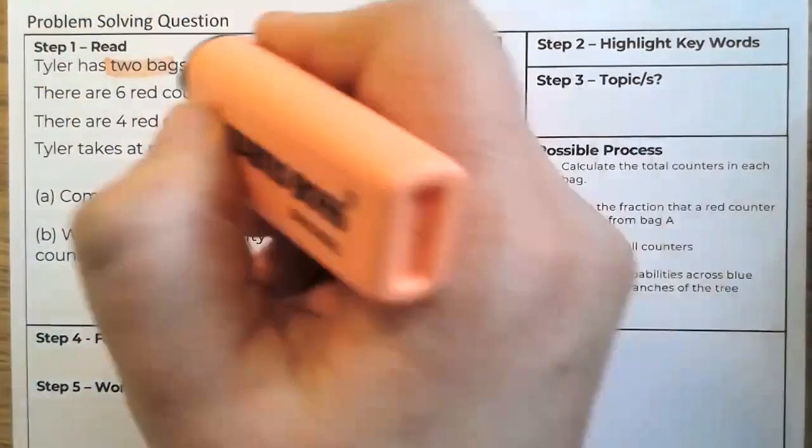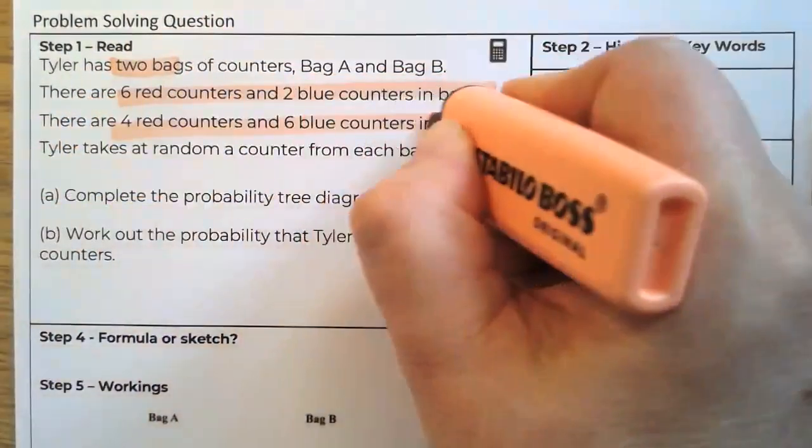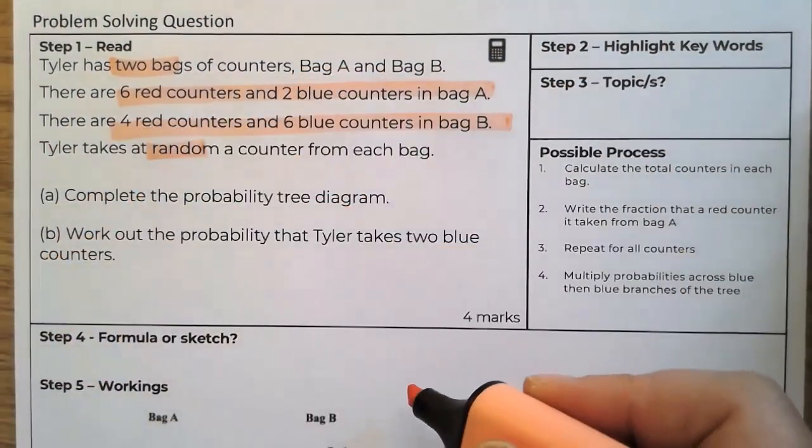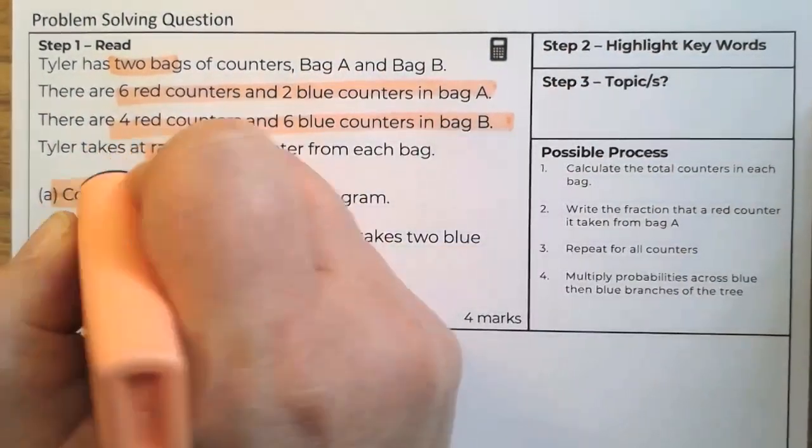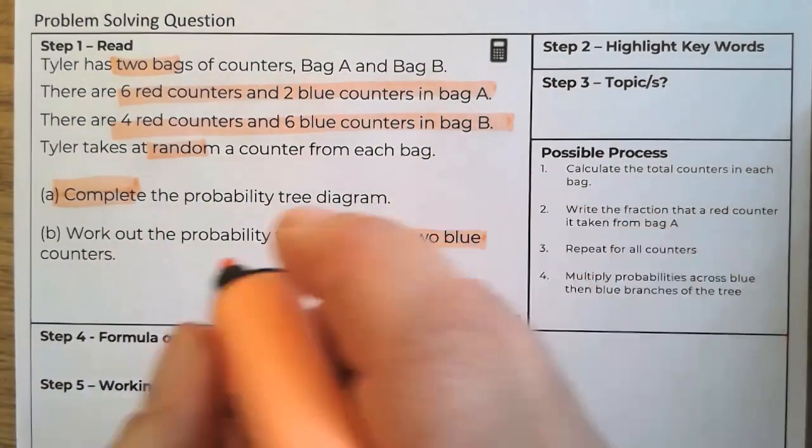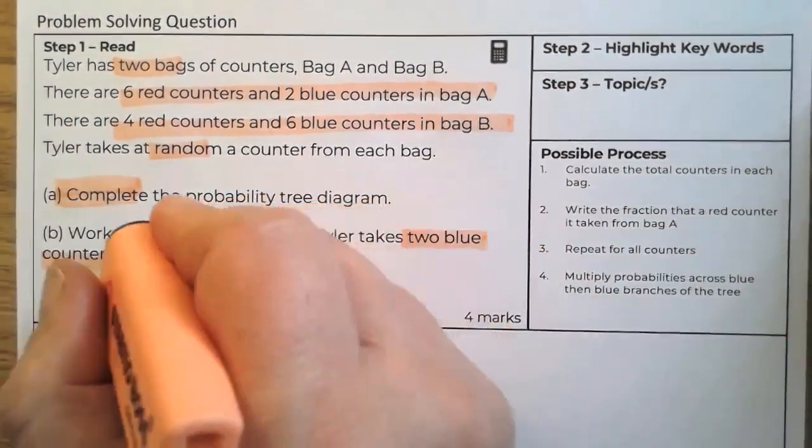There are two bags. This is what's in bag A and bag B. We're going to take a random counter out and we're going to complete the table, which means we're going to fill in the gaps. This one is about two blue counters, and we're going to work out the probability.